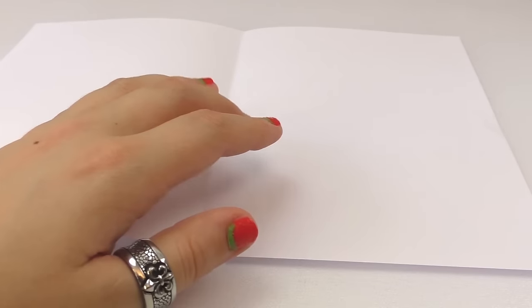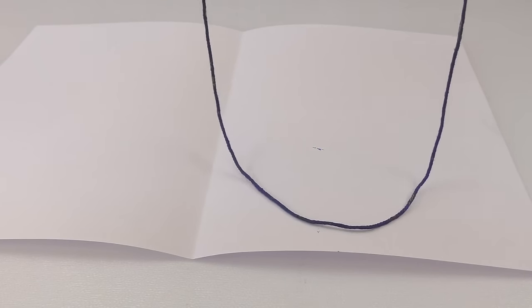We're going to grab our blank sheet of paper and open it. We're just going to focus on the right side of the paper and we're going to arrange the string however we want. So I'm grabbing it by the edges where there is no paint.